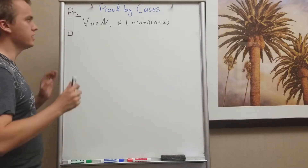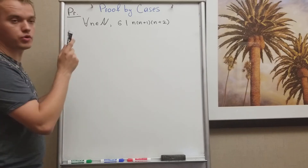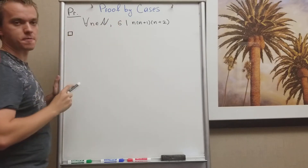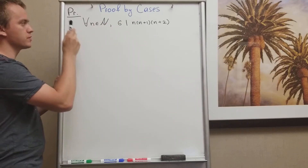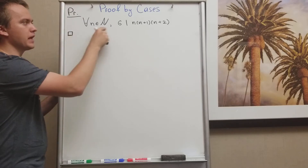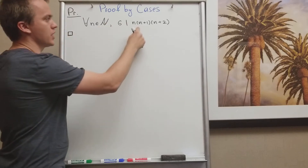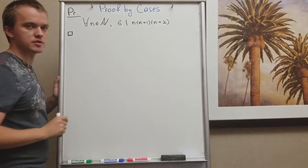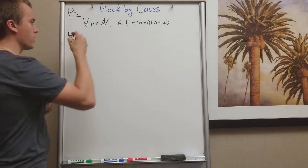Hello guys! In this video I want to show you proof by cases and I want to prove the following problem: if I take any integer, then three consecutive numbers are always going to be divisible by 6. So let's start our proof.